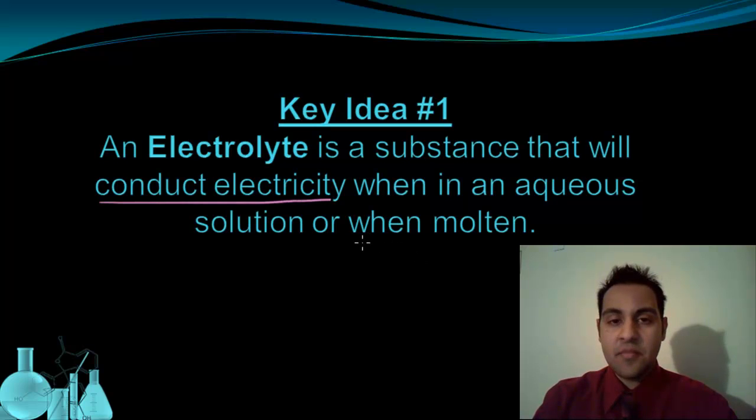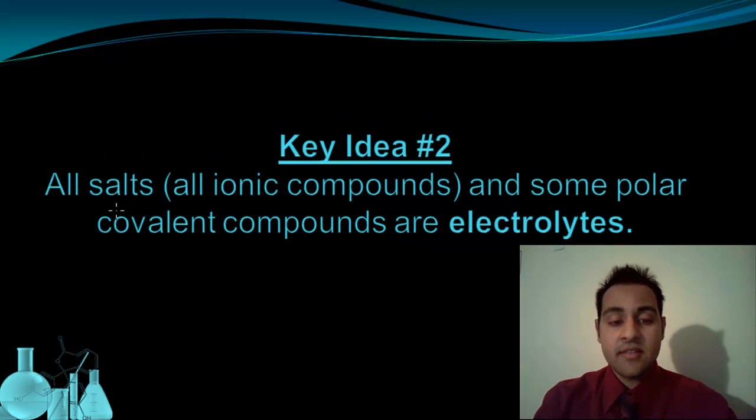But what about this second part, this when molten part? How does that result in ions that can allow the conduction of electricity? We also said that all salts are electrolytes, but also some polar covalent compounds. How can polar covalent compounds be electrolytes when they are not made up of ions at all? We're going to address these issues as we continue discussing electrolytes.